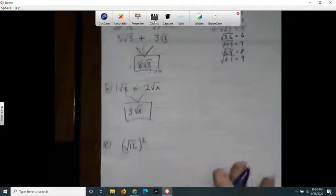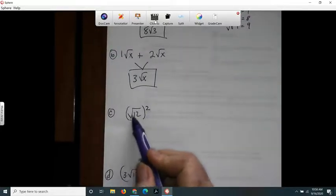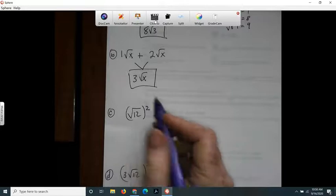This one, if I square a square root, I just get 12. They undo each other. So that's just equal to 12.